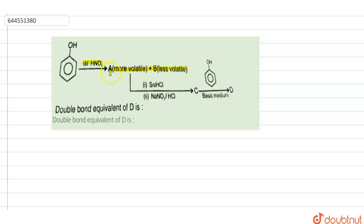This more volatile one, which is A, is reacting first with Sn/HCl and after that NaNO2/HCl, producing C. And C, after reacting with phenol in basic medium, is producing D.